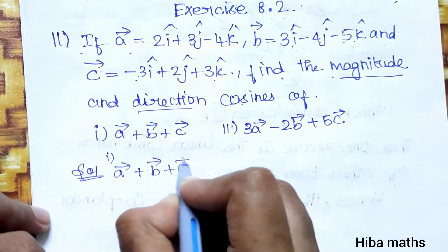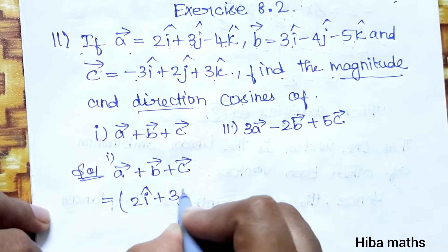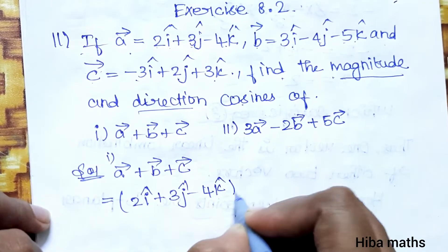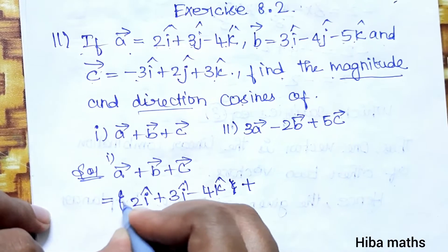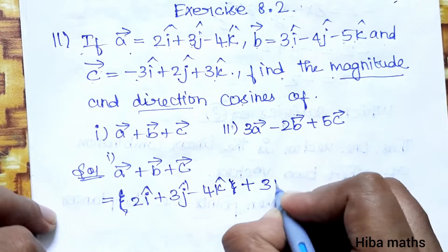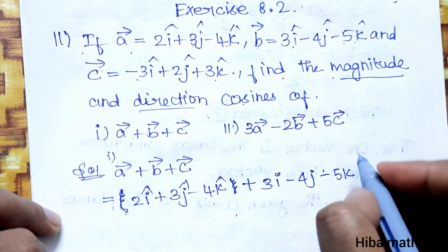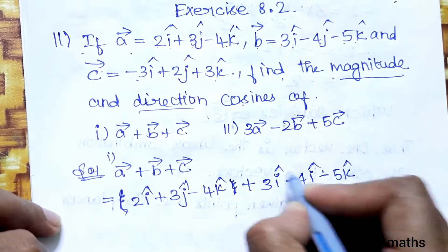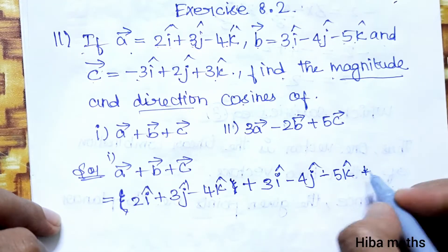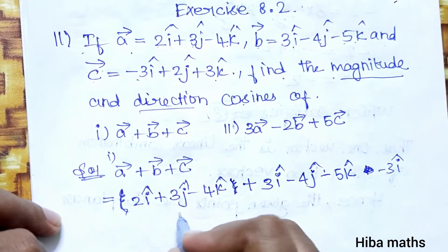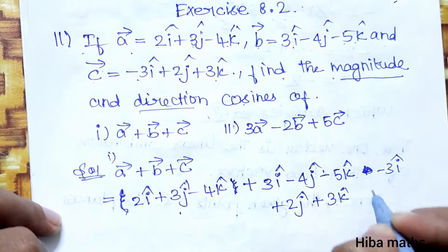a + b + c: i components are 2i + 3j − 4k, plus 3i − 4j − 5k, and then minus 3i + 2j + 3k. So collecting the i components: 2i + 3i − 3i.